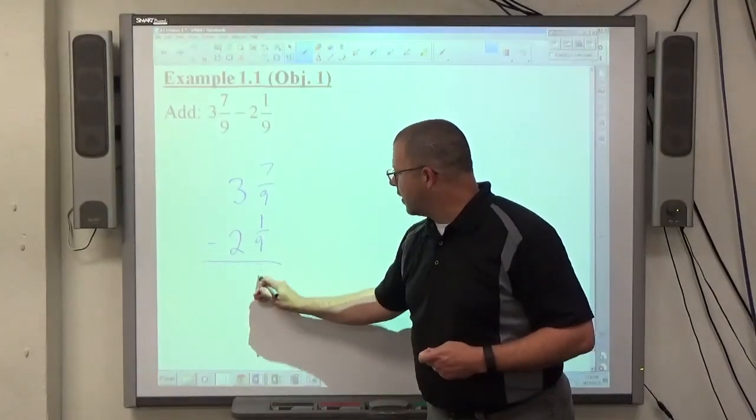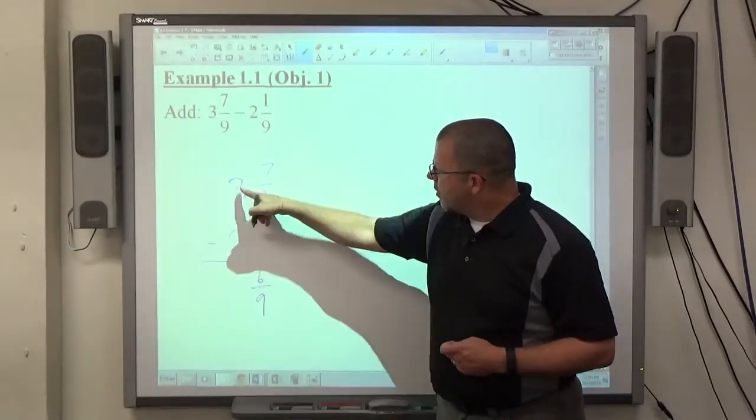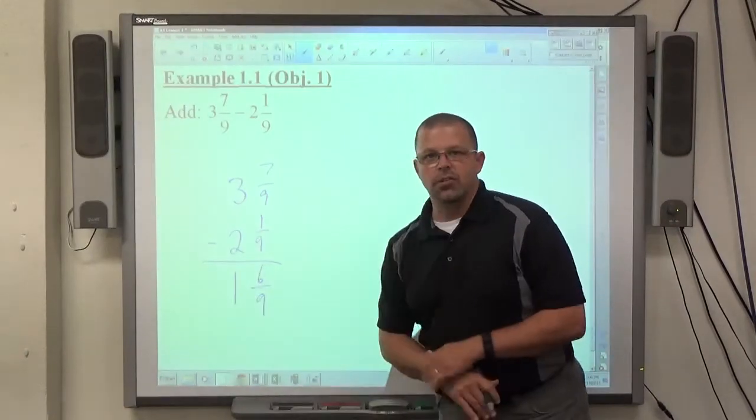7 minus 1 is 6, and we put that over 9. And then 3 minus 2, the whole number subtraction just gets you 1.